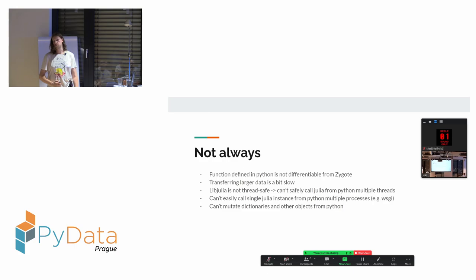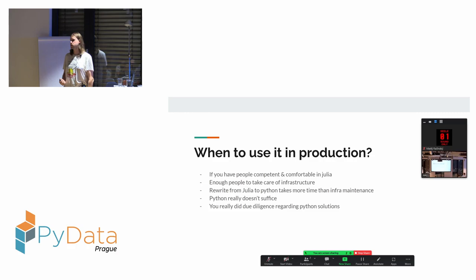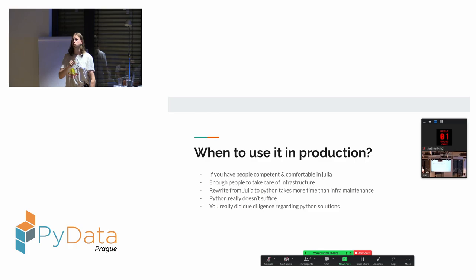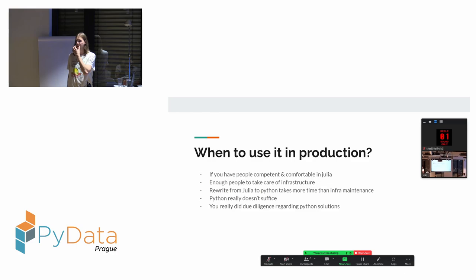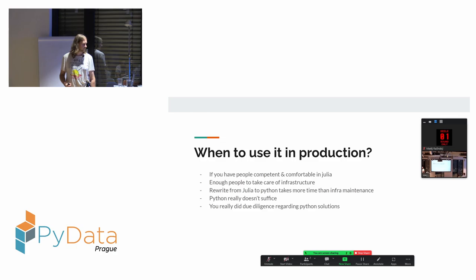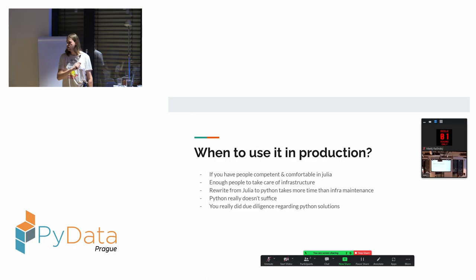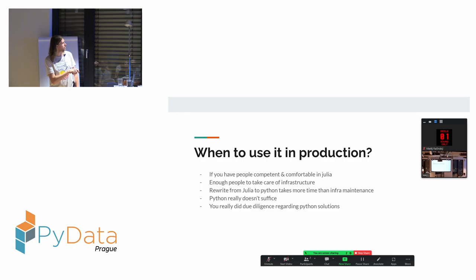When to use Julia in production? If you have people willing and comfortable with Julia, and people to take care of infrastructure - or no infrastructure to worry about. It's worth it if rewriting from Julia to Python would take more time than managing the infrastructure. At Avast, we already had packages in Julia developed by an associate professor over several years, so we decided to use Julia rather than rewrite everything in Python. Remember these considerations when deciding whether to use Julia in production. The code I've shown is in this repo. Thank you for your attention.